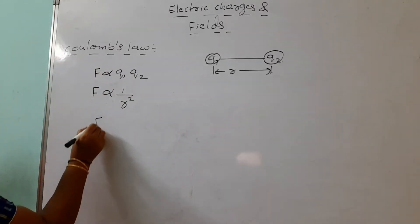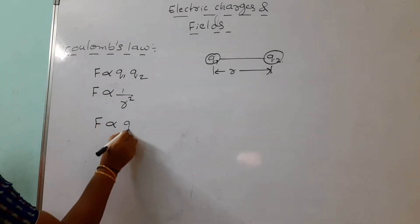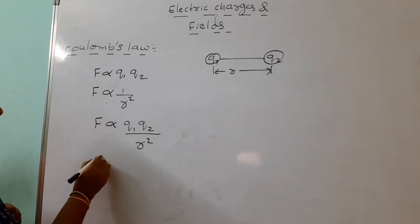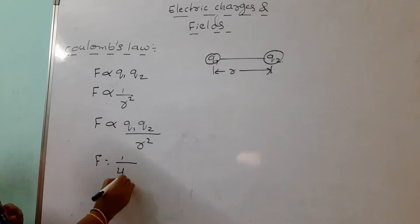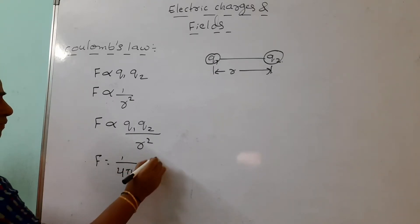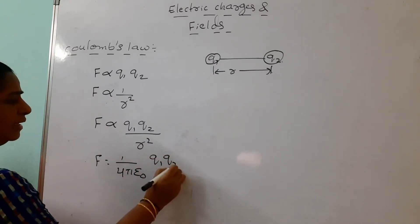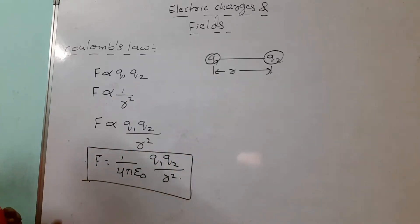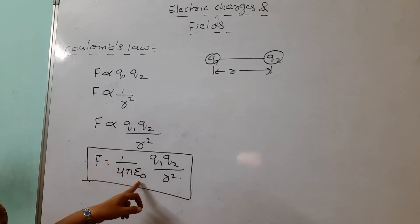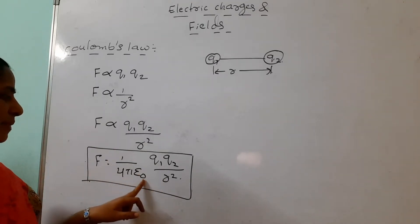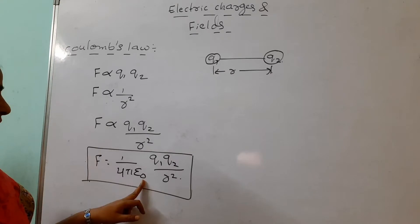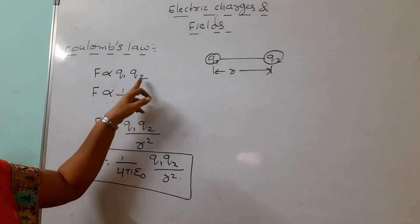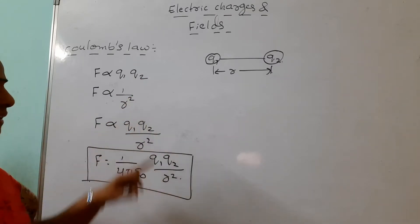Combining these two proportionalities, F is directly proportional to Q1Q2 by R². Replacing proportionality with a constant, F = (1/4πε₀) × Q1Q2/R². You can write up to here and get marks for a short answer. Here 1/4πε₀ is the constant, where ε₀ is the permittivity of free space, and this value is 9 × 10⁹.